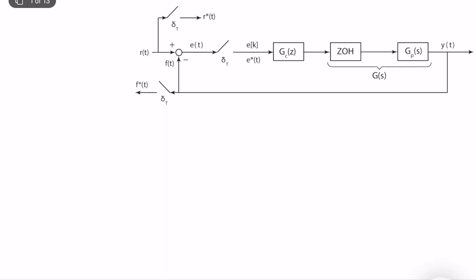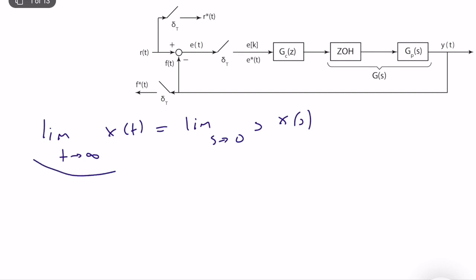In the continuous time domain, the final value theorem states that the limit as t goes to infinity of x(t) is equal to the limit as s goes to zero of s times X(s), where X(s) is the Laplace transform of x(t). This equality holds if this limit exists.